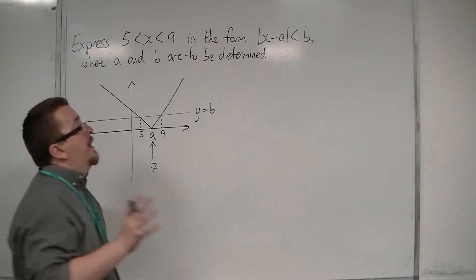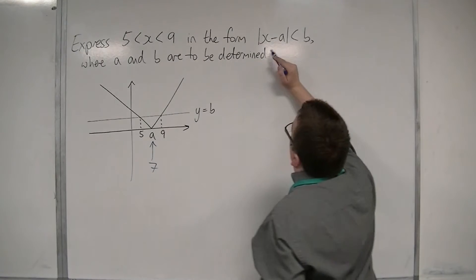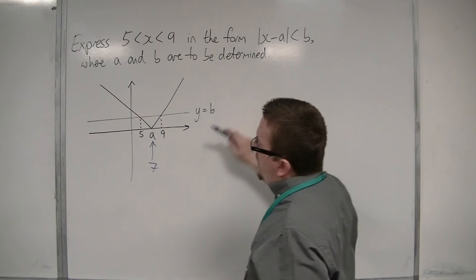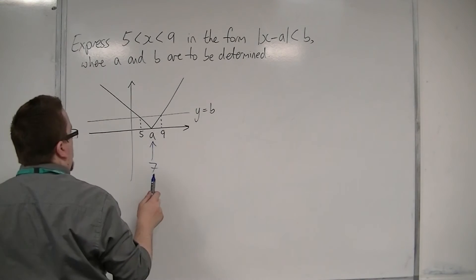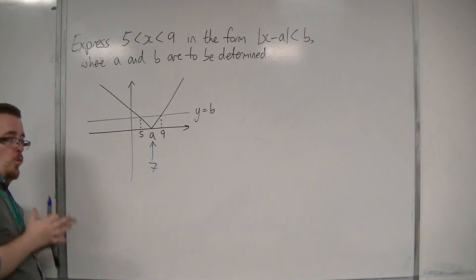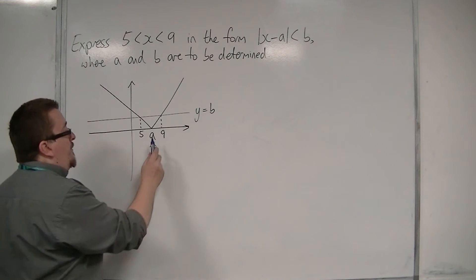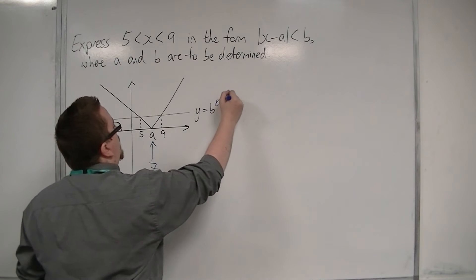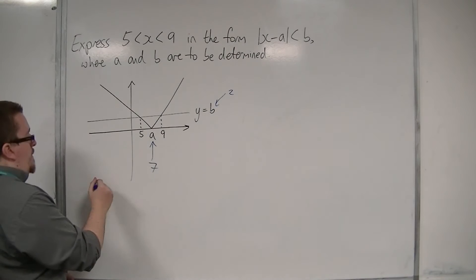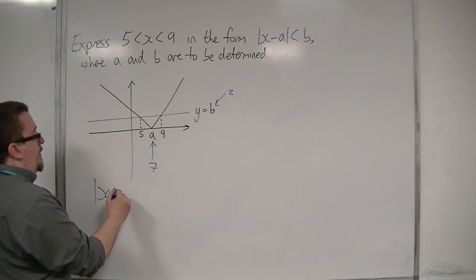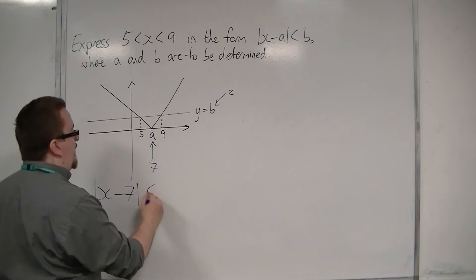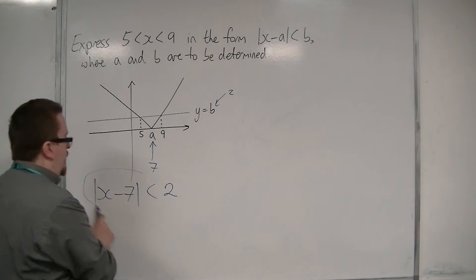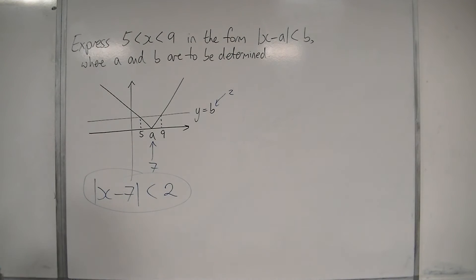Now, if you look at this inequality, we can see that the number in front of the x is 1. So the gradient of this line is 1. That means that you go 1 along and 1 up. But if I'm going 2 along from 7 to 9, I must be going 2 up. So that must mean that b is 2. And so we must have |x - 7| < 2.